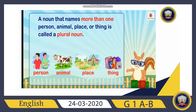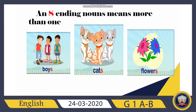And a plural noun means more than one person, more than one animal, more than one place, or more than one thing — that is called a plural noun. When we talk about more than one thing, we add an 's' ending to the noun.